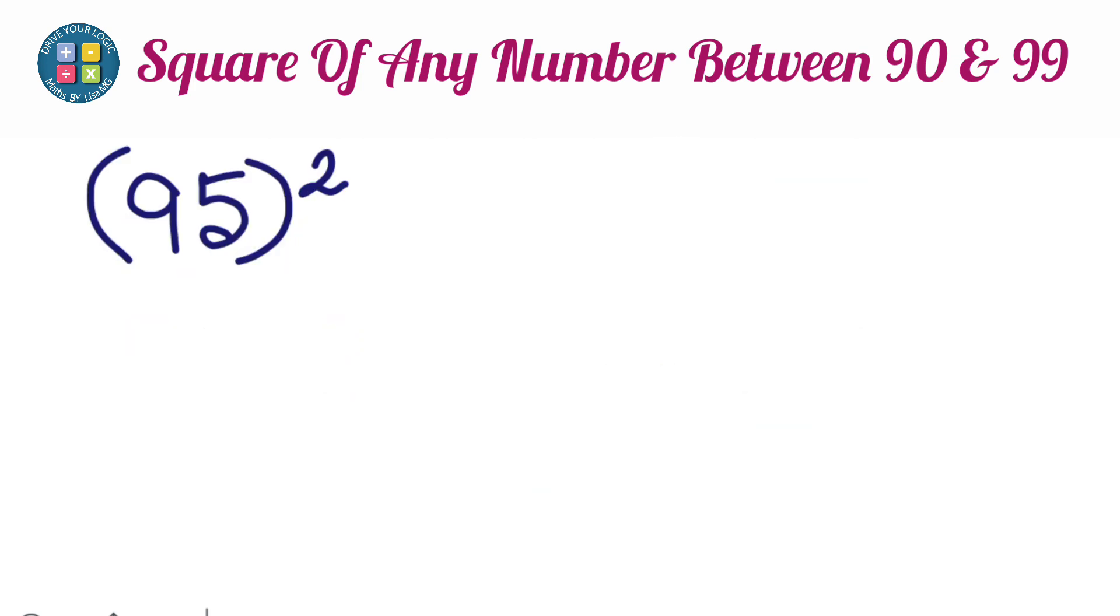Let me show you one more example, 95 square. Same way you have to do 100, you will take 100 and you subtract the given number 95. You will get 5.